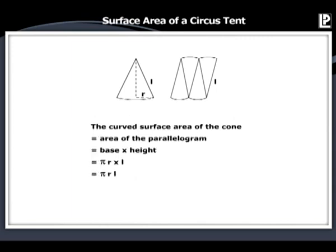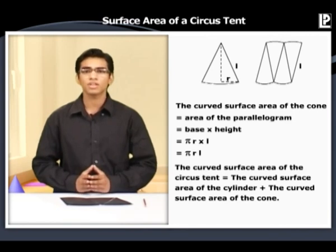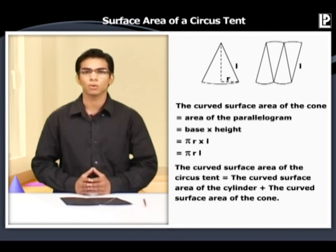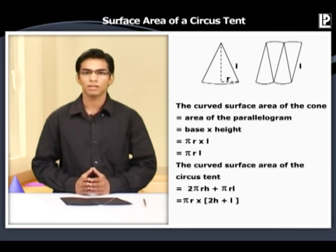The curved surface area of the cone is equal to the area of the parallelogram, equal to base into height, equal to πr into L, equal to πrL. Hence, the curved surface area of the circus tent is equal to the sum of the curved surface area of the cylinder and the curved surface area of the cone. This is equal to 2πrH plus πrL, or πr times (2H + L).